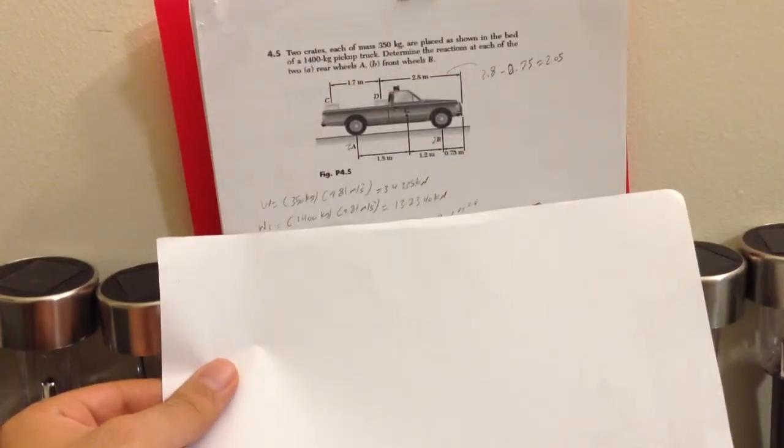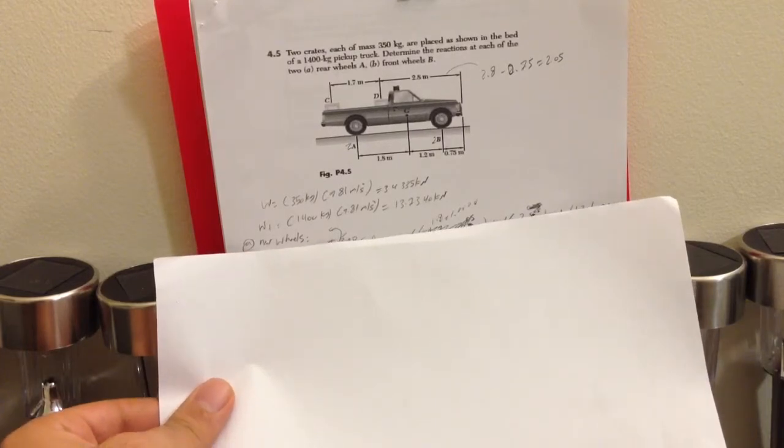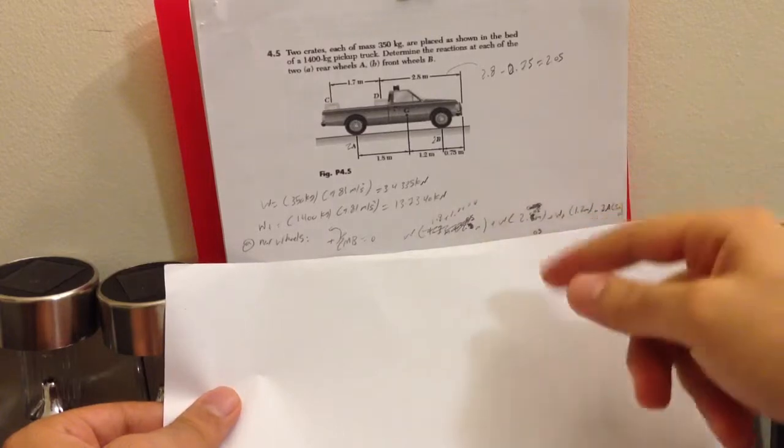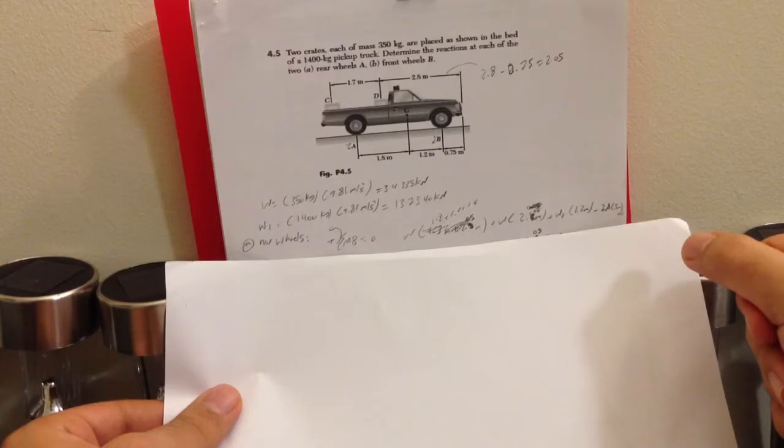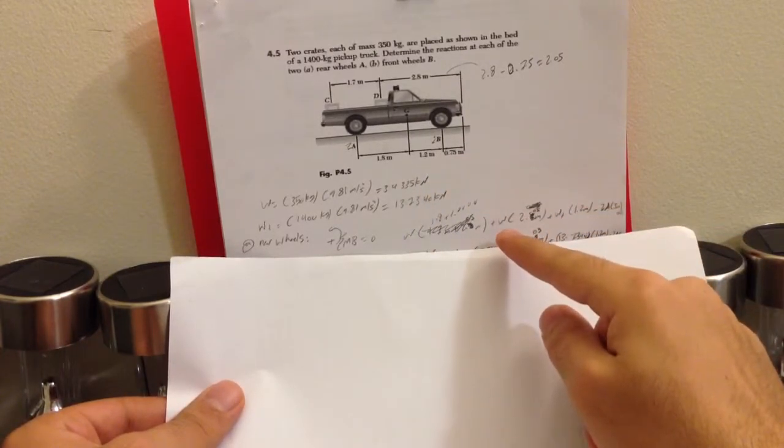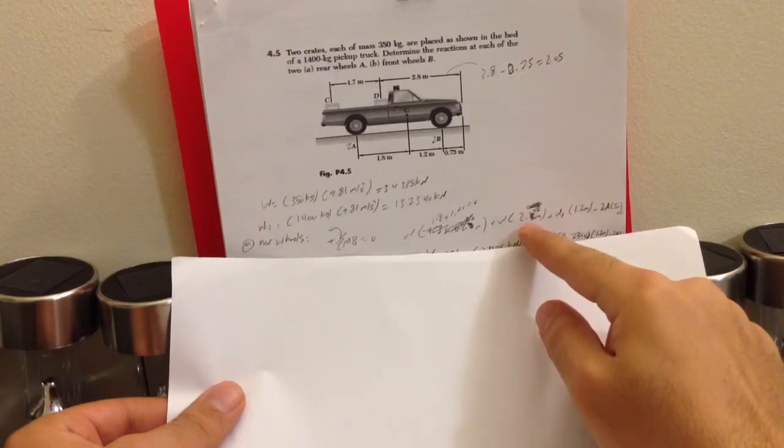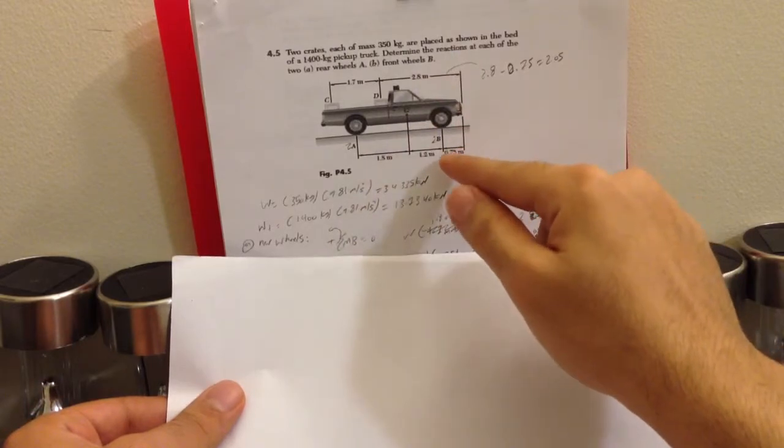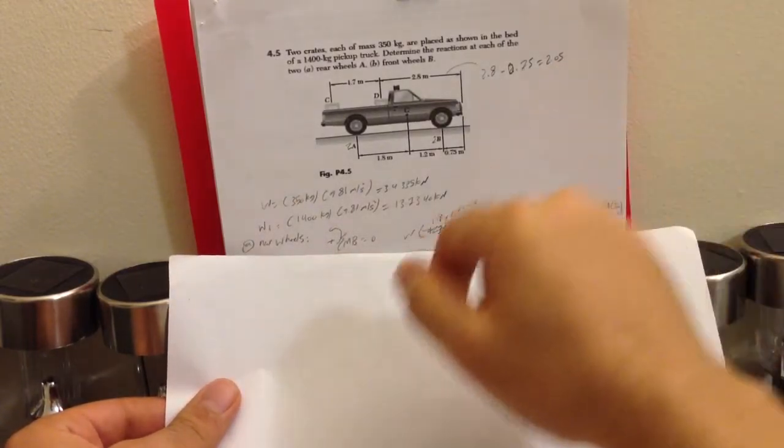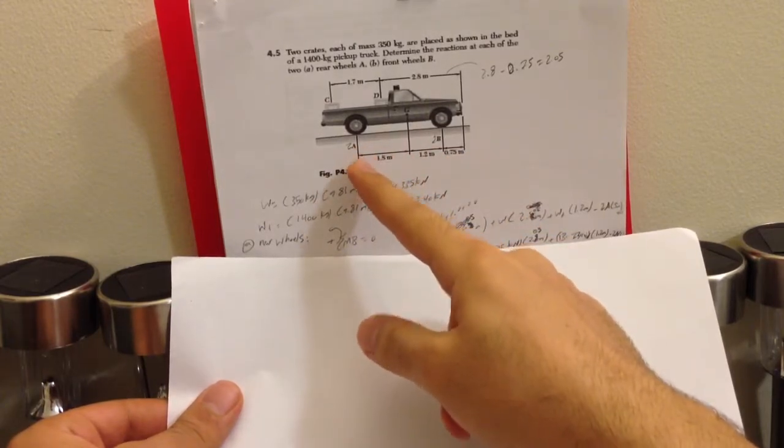He asked us for the real wheel at point A, so sigma MB equals 0. The weight is 1.08 plus 1.2 plus 0.75 plus the weight times 2.0805—we get this number by subtracting 2.8 minus 0.75 which equals 2.05—plus the weight times 1.2 minus 2 times 2A because we want the real wheel A.